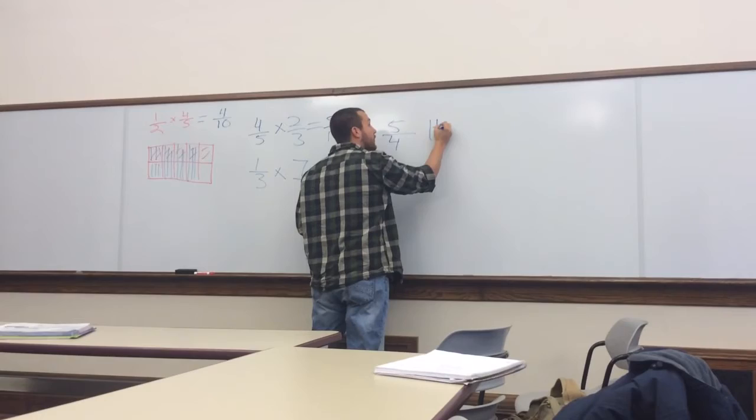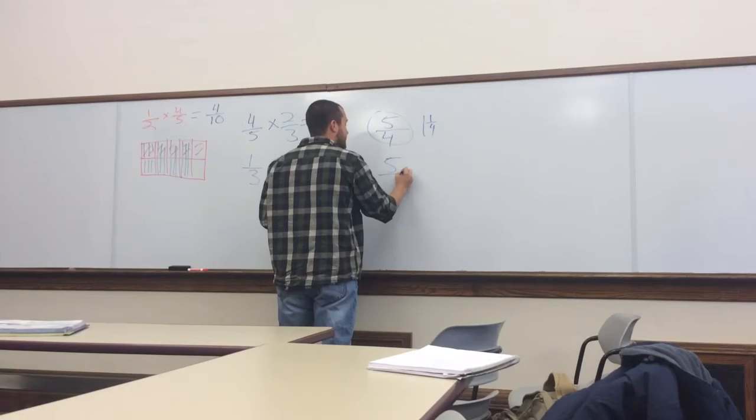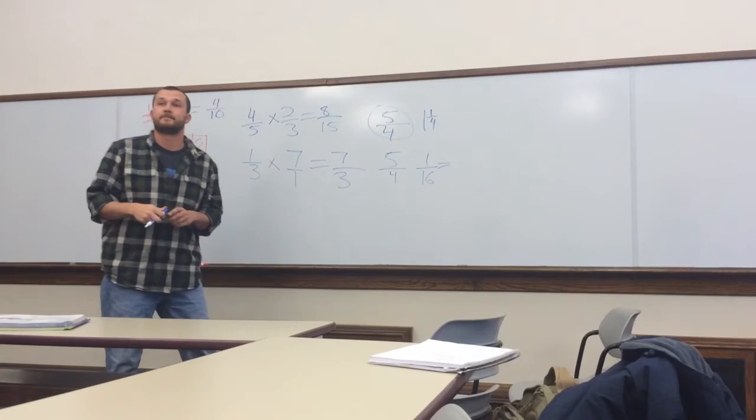The proper way of writing that would be 1 and 1 fourth. Of course, for this example, we're going to use 5 fourths. So we have 5 fourths times 1 sixteenth.